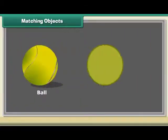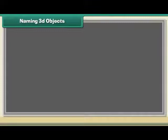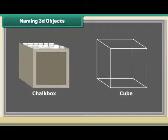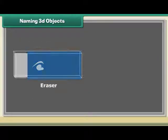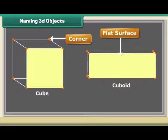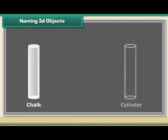Naming 3D objects. Let us now give names to the solid shapes. A chalk box is a cube. An eraser is a cuboid. Both cube and cuboid have corners and flat surfaces.